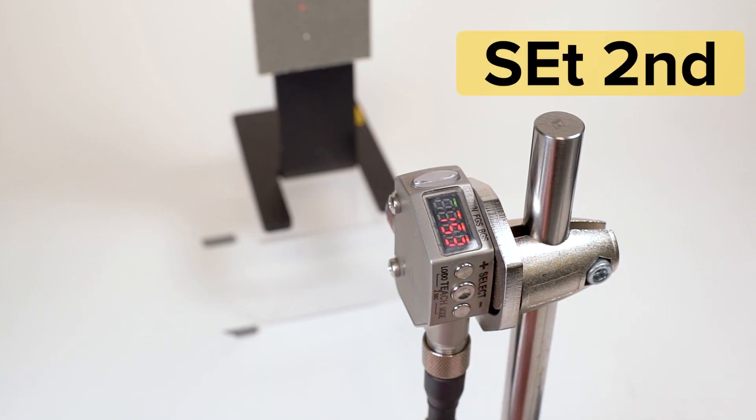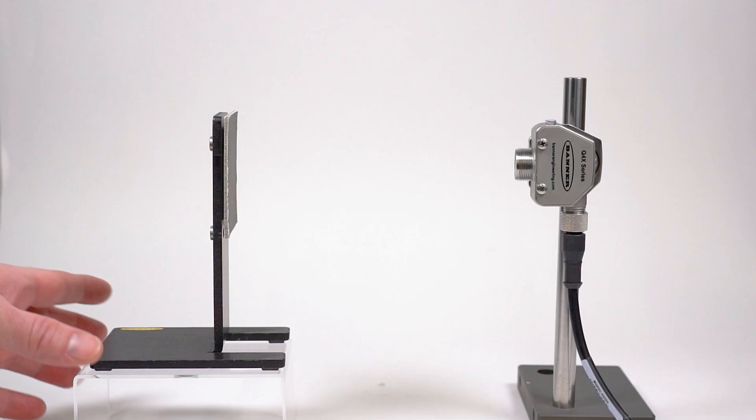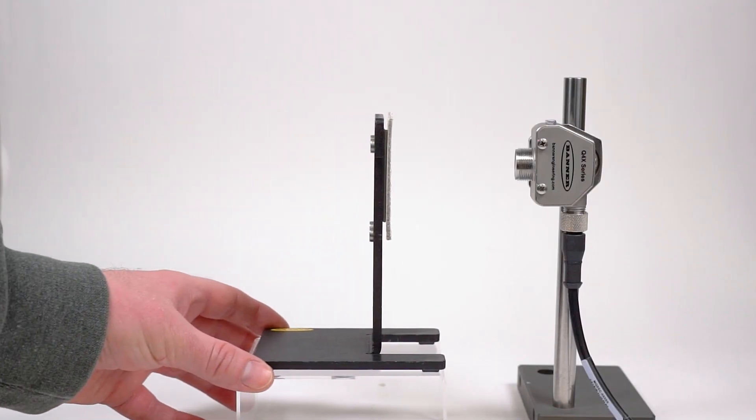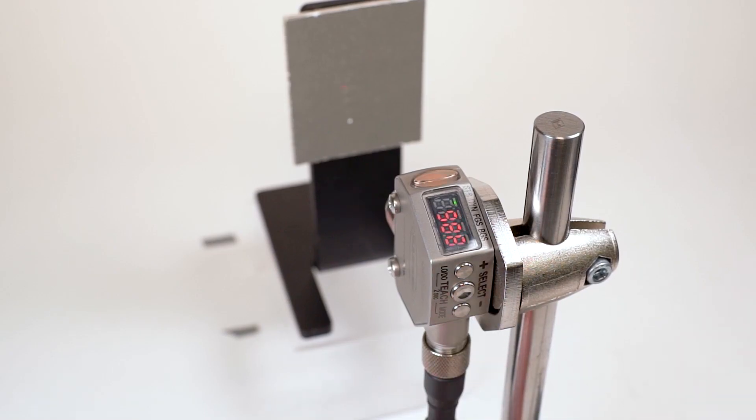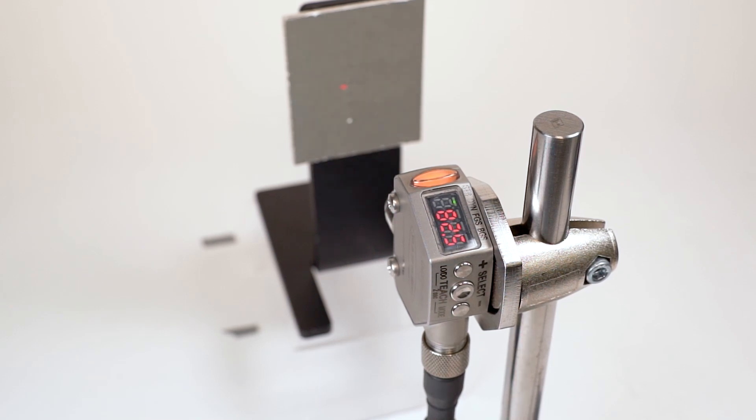The display will then show set second. Present the second target condition and press the select button again. The display will flash to confirm that the taught conditions have been accepted and the sensor will return to run mode.